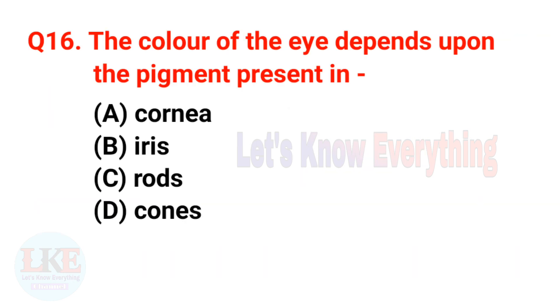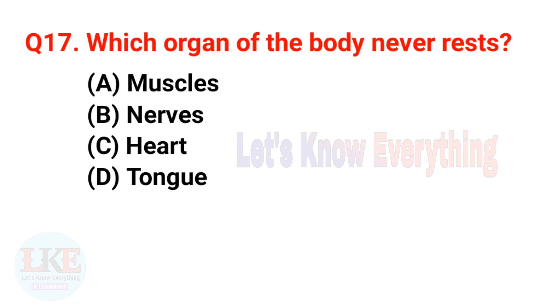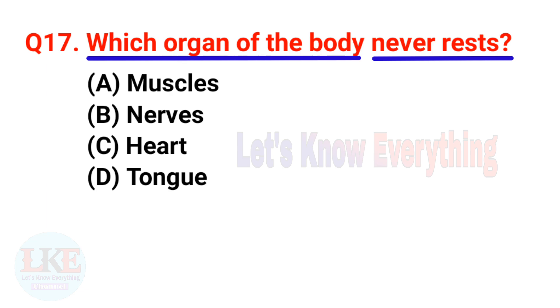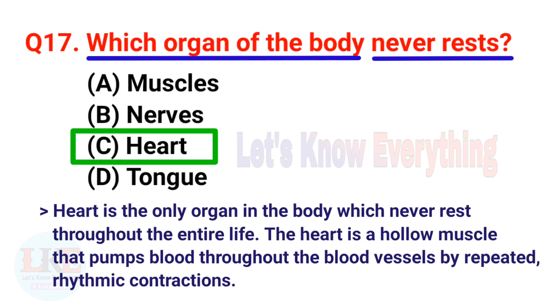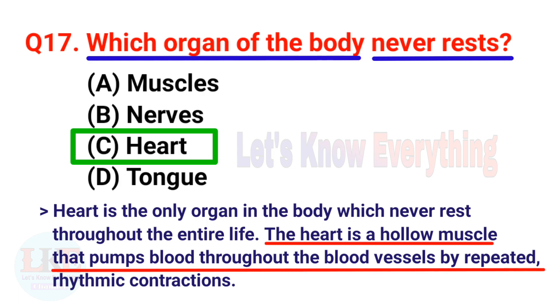Question 16: The colour of the eye depends upon the pigment present in the iris. Question 17: Which organ of the body never rests? The right answer is option C, Heart. The heart is the only organ in the body that never rests throughout an entire life. The heart is a hollow muscle that pumps blood throughout the blood vessels by repeated rhythmic contraction.